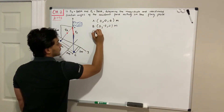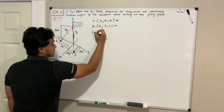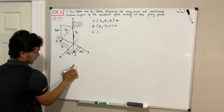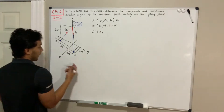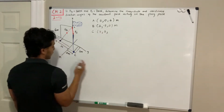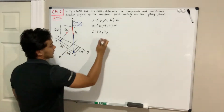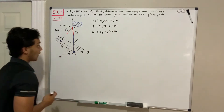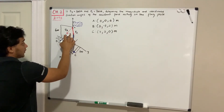Now for point C: in the x direction we have three meters, in y we have positive two, and also zero in the z direction. So point C is (3, 2, 0) meters.